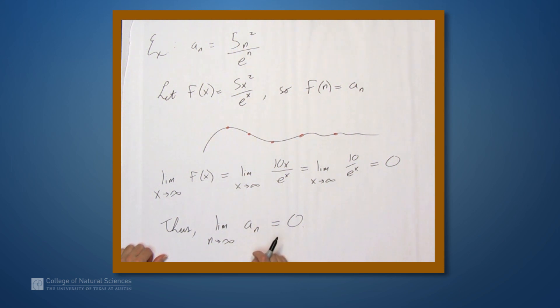Now, we have to be careful. So in this situation, the function we associated with a sub n is this function f of x equals 5x squared over e to the x. And that limit does indeed exist as x goes to infinity.